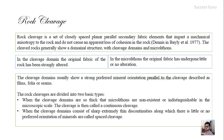The cleavage domain usually shows a strong preferred mineral orientation parallel to the cleavage, described as films, folios, or seams. The difference between these three terms is thickness: a film is very fine, less than one millimeter; a folio is thicker than a film; and a seam is even larger than a folio. All three terms indicate a planar fabric.